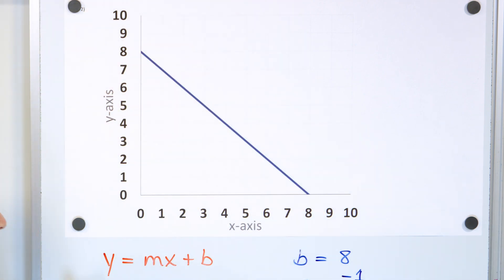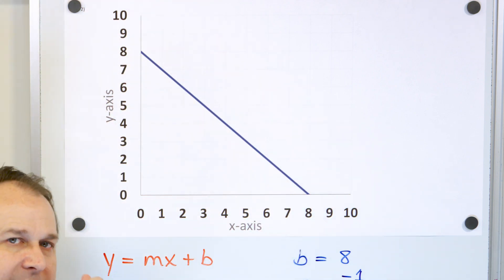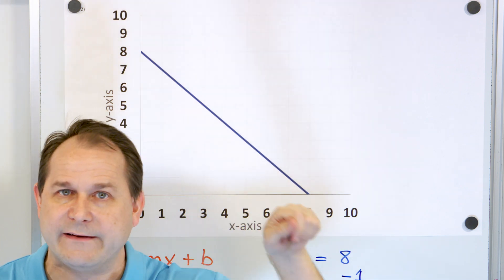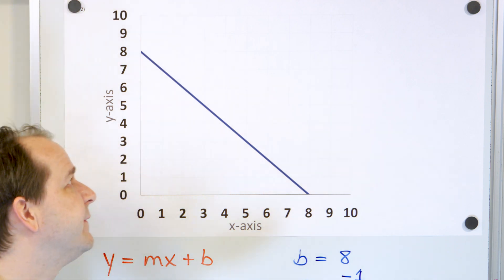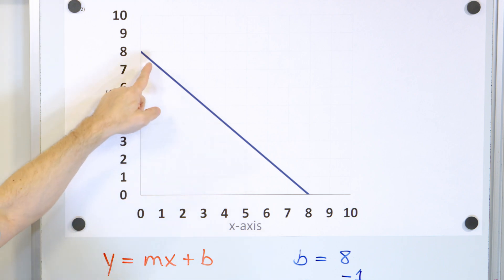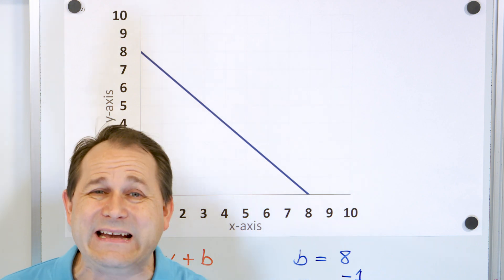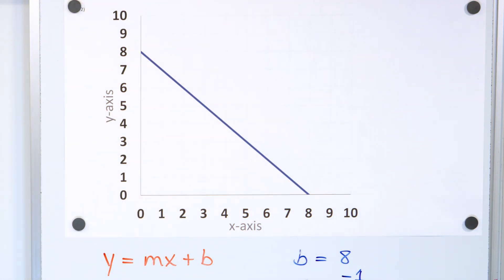This is the equation that describes all of the points on this line. Keep in mind, you can pick any value for x. If you put a value of one half in there and add the fractions, you're going to get a fractional y value which will also be on the line. So any number for x you can put in — that's the bottom line. That's the equation of the line for problem number one.